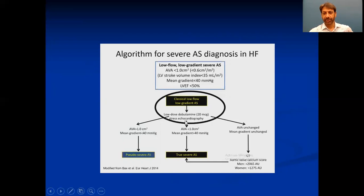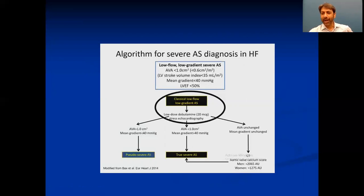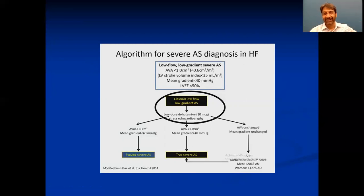Second: if after giving dobutamine, your area remains less than 1 cm² and the gradient increases to more than 40 mmHg, that means this is true severe AS — you need AVR in this patient. Third: sometimes the aortic valve area remains unchanged and the mean gradient remains unchanged — both remain the same. In that difficult case, you have to go for CT scan and look at calcification, with specific thresholds for men and women.